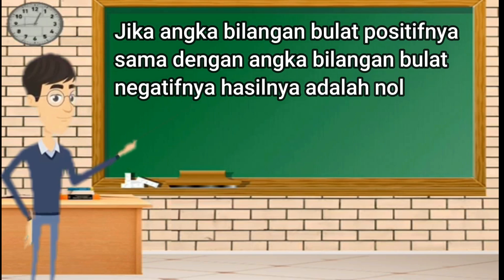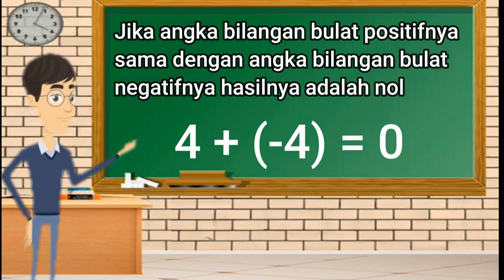Jika angka bilangan bulat positifnya sama dengan angka bilangan bulat negatifnya, hasilnya adalah 0. Contoh: 4 ditambah negatif 4 sama dengan 0, karena positif 4 ditambah dengan negatif 4, karena bilangannya sama menghasilkan 0.